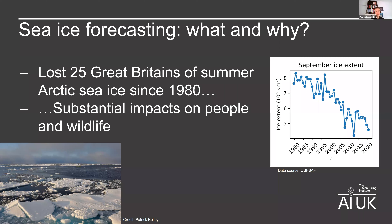So what is sea ice and why would we want to forecast it? Sea ice is a layer of frozen water that sits on top of the ocean. It covers vast regions of the polar oceans in the Arctic and in the Antarctic. It expands in the frigid winters to cover a very large area and then retreats to a smaller extent as the temperature warms in the summer. This annual cycle has been occurring for millennia.